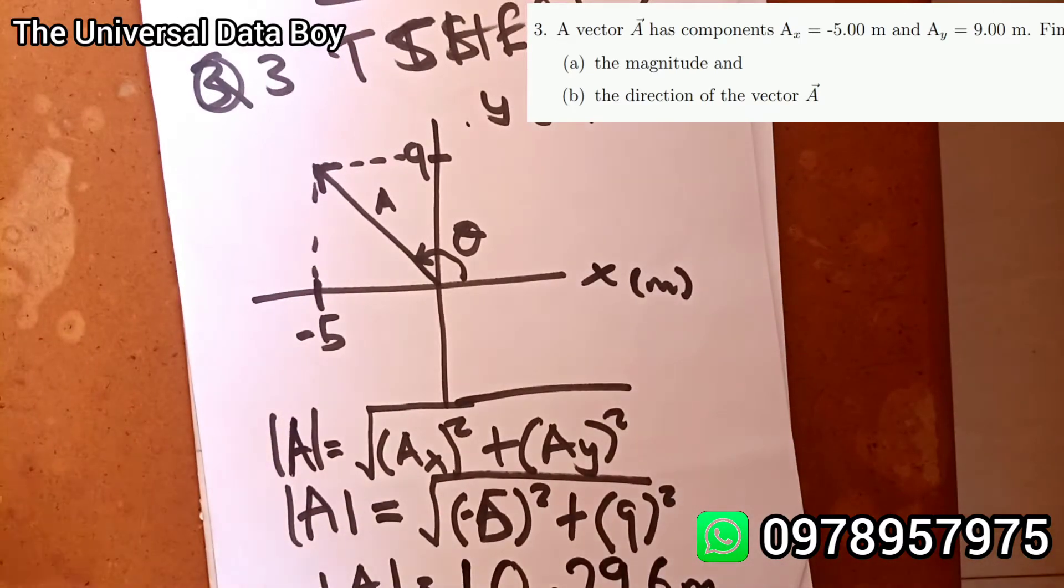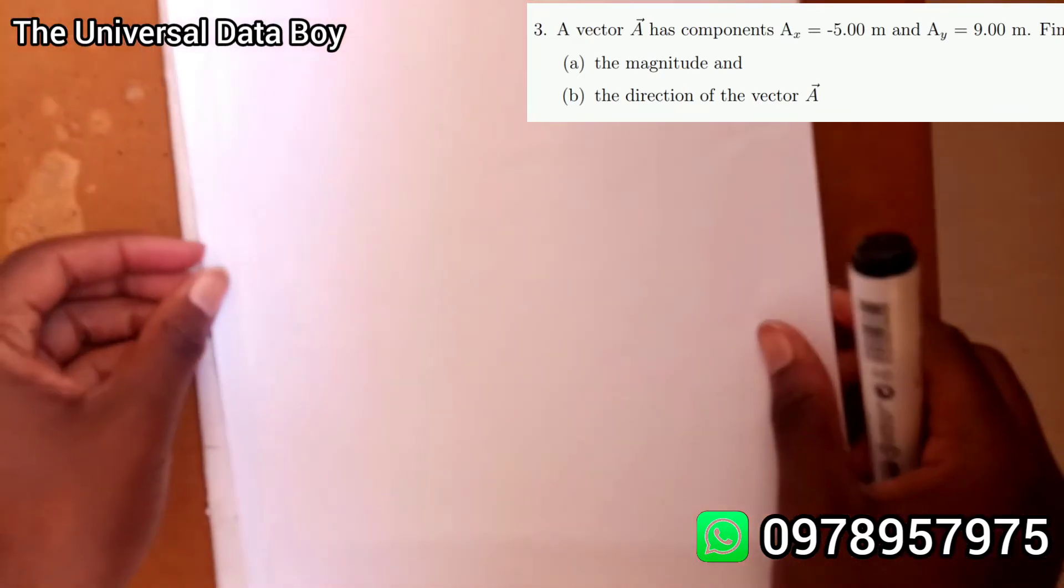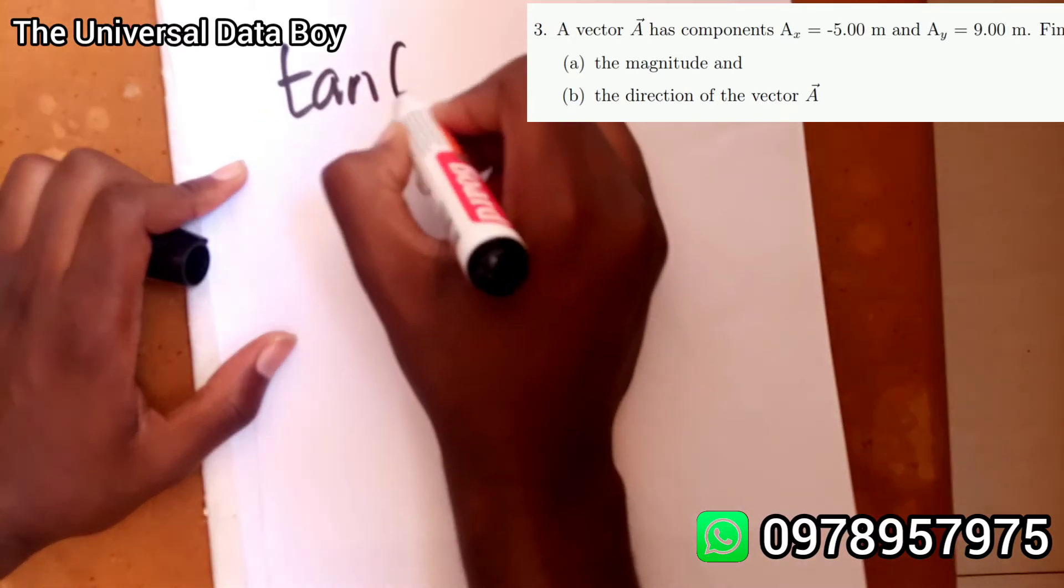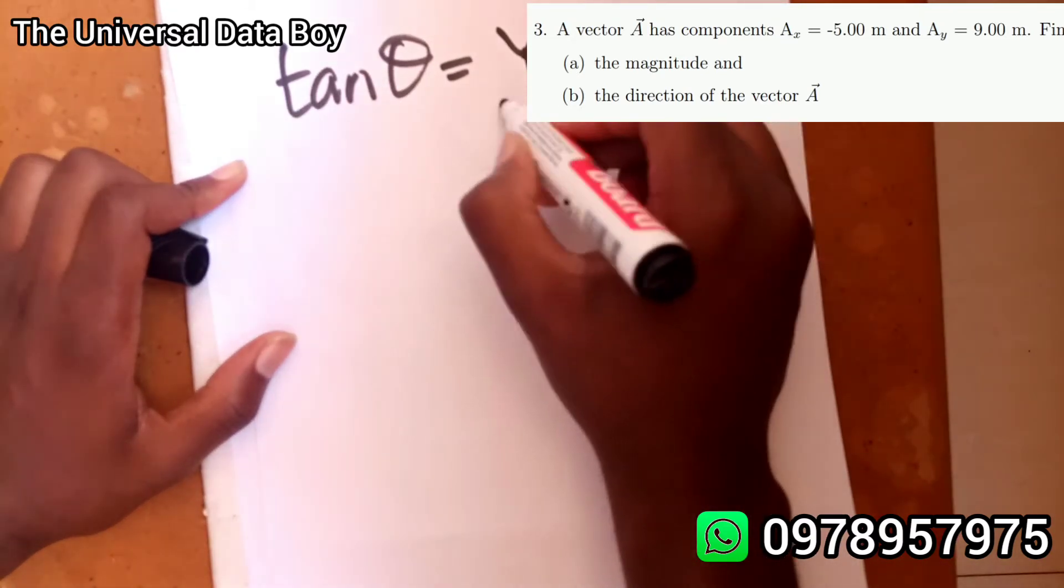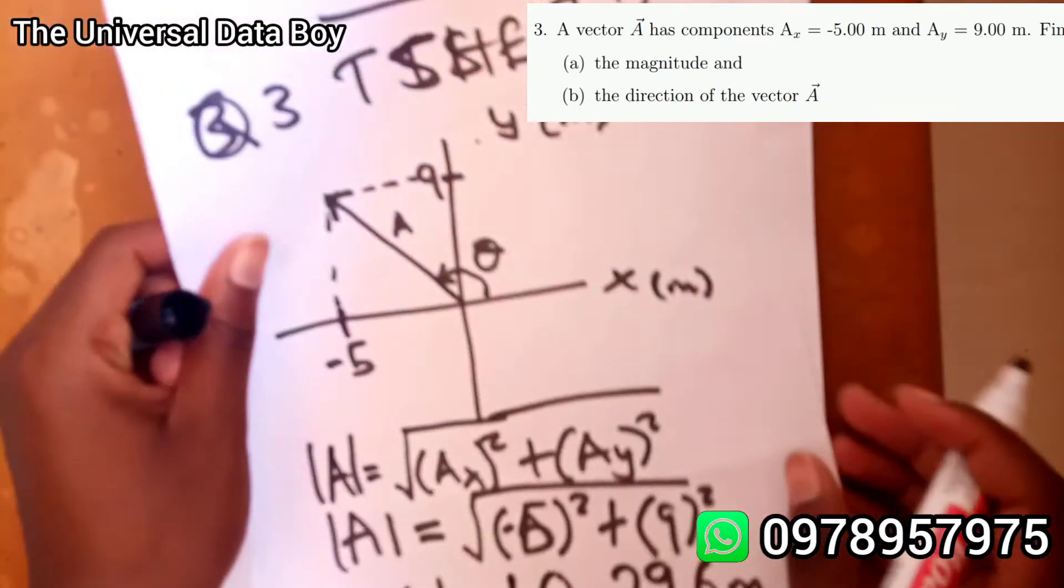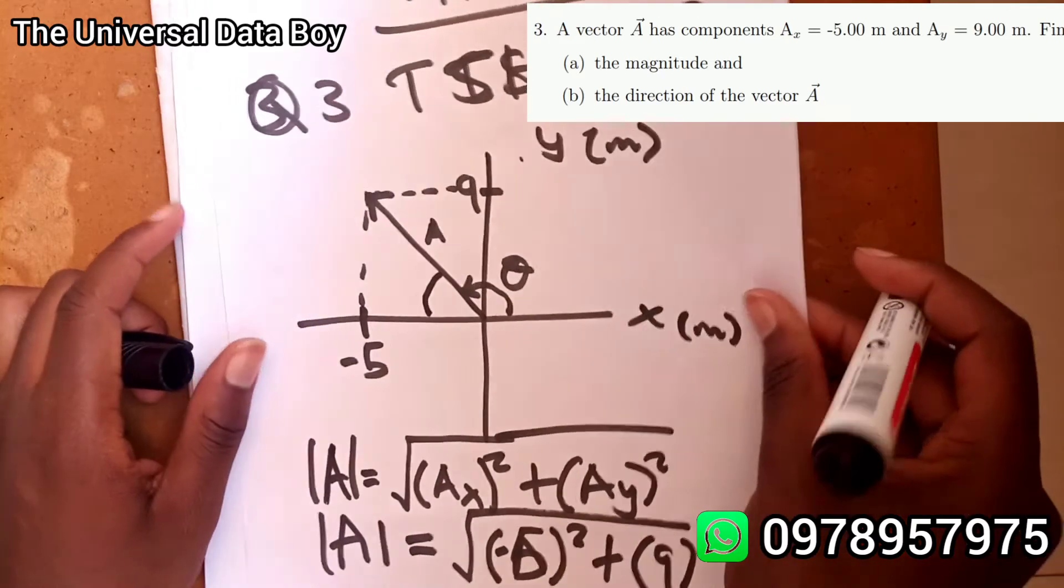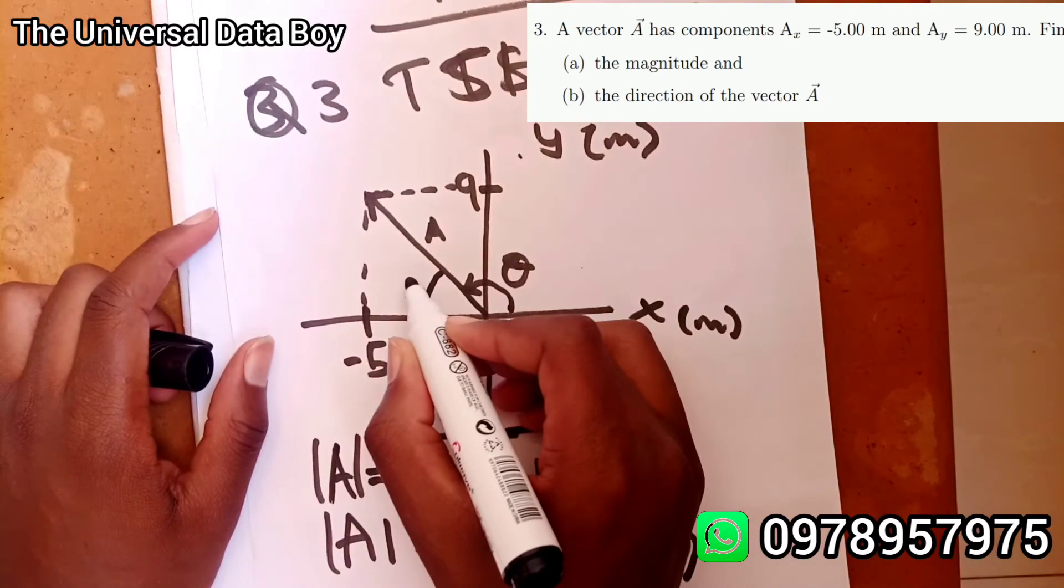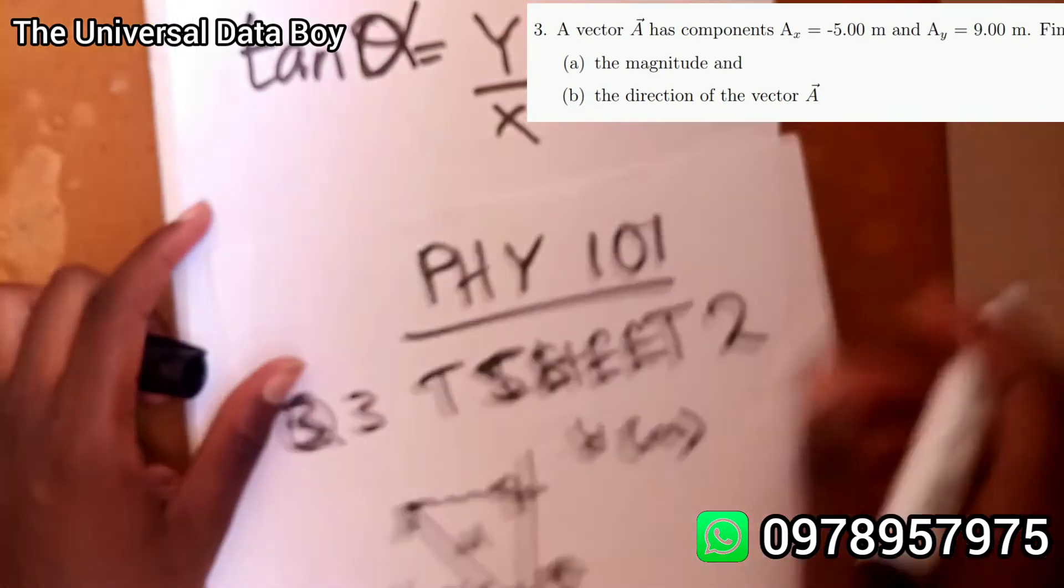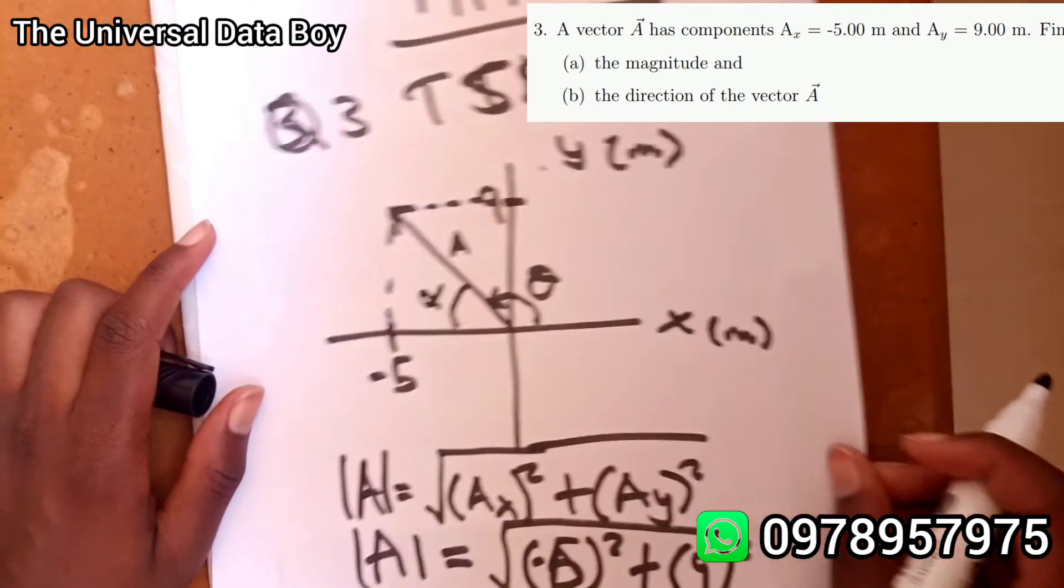Now let's find the direction. Direction, you know the direction is given by tan theta equals whatever is in the y over whatever is in the x. Now when you look at this one we are having, in fact we'll use a different angle. We can label this one as alpha then this one as theta. I'm going to have this one as tan alpha so that when we find alpha we'll come and find our theta later on.